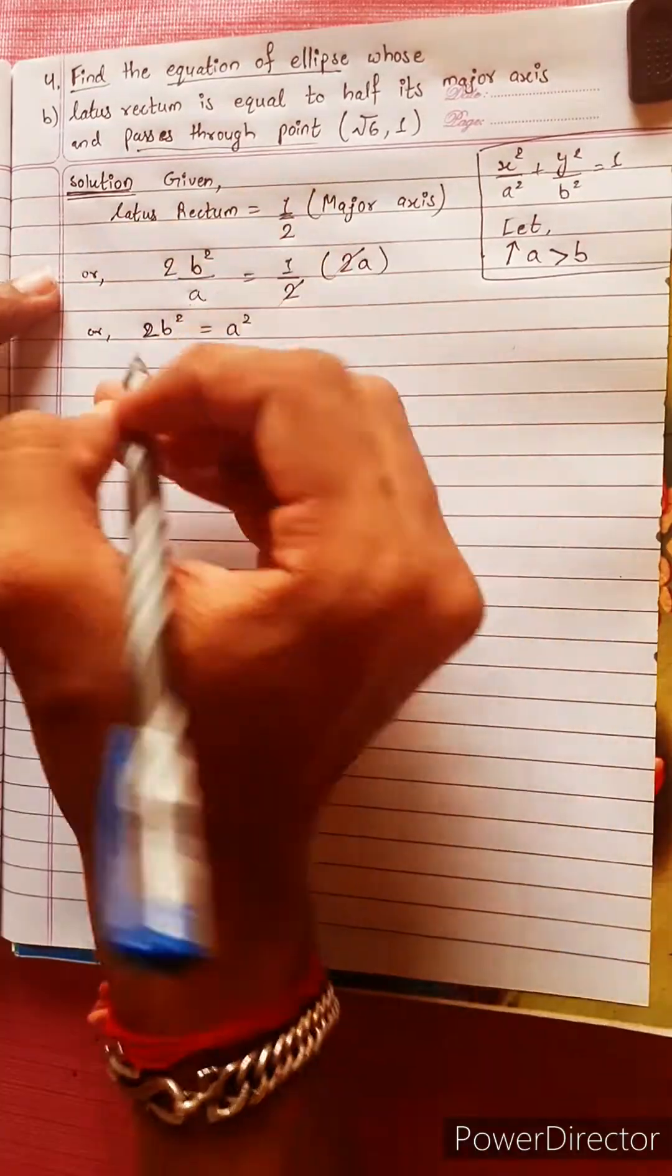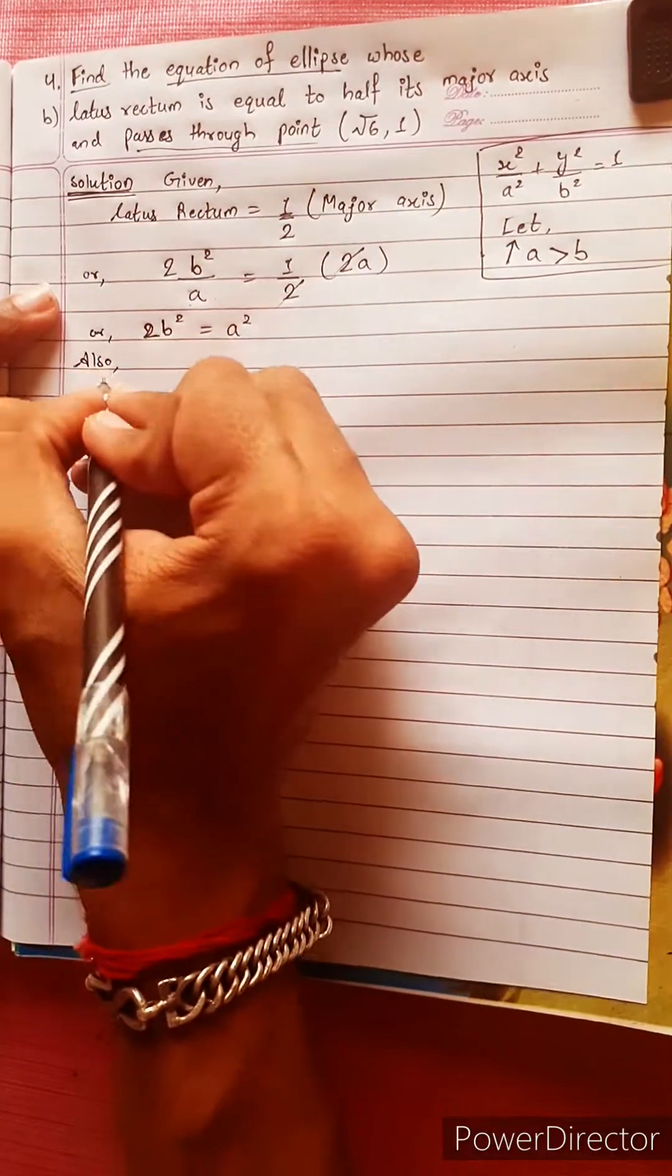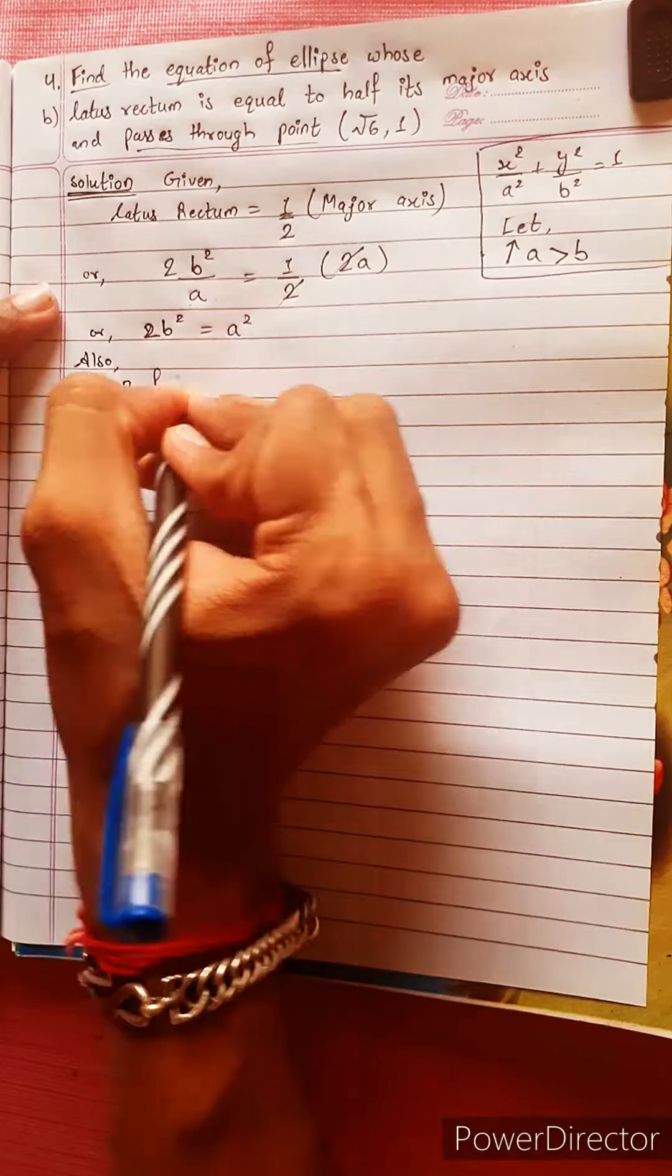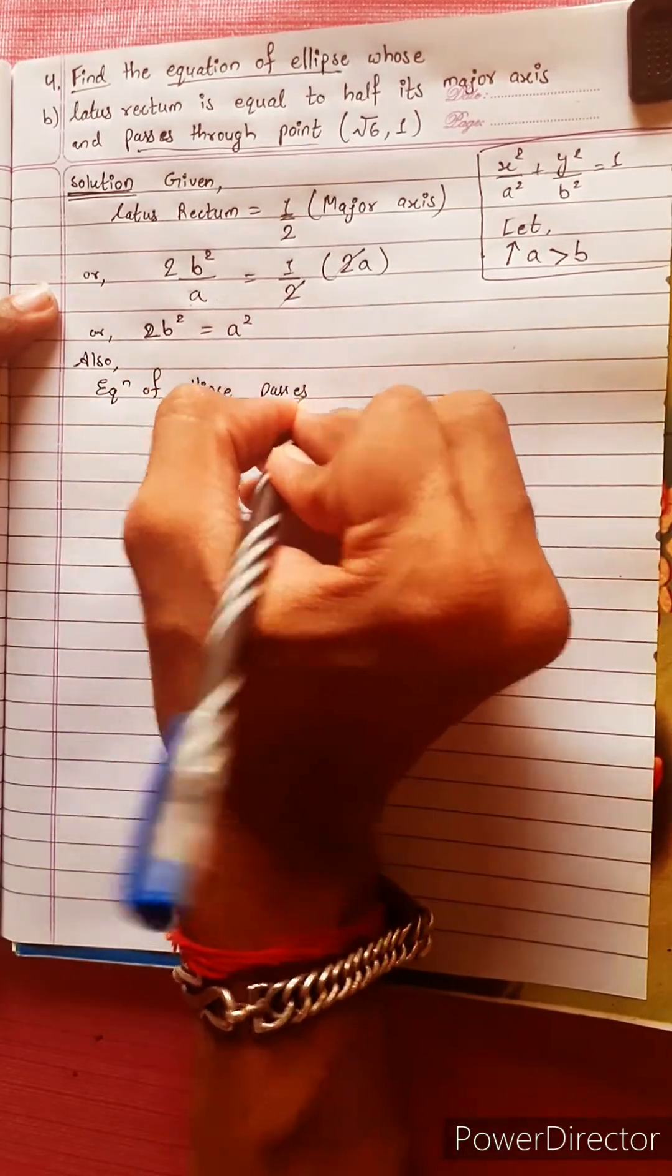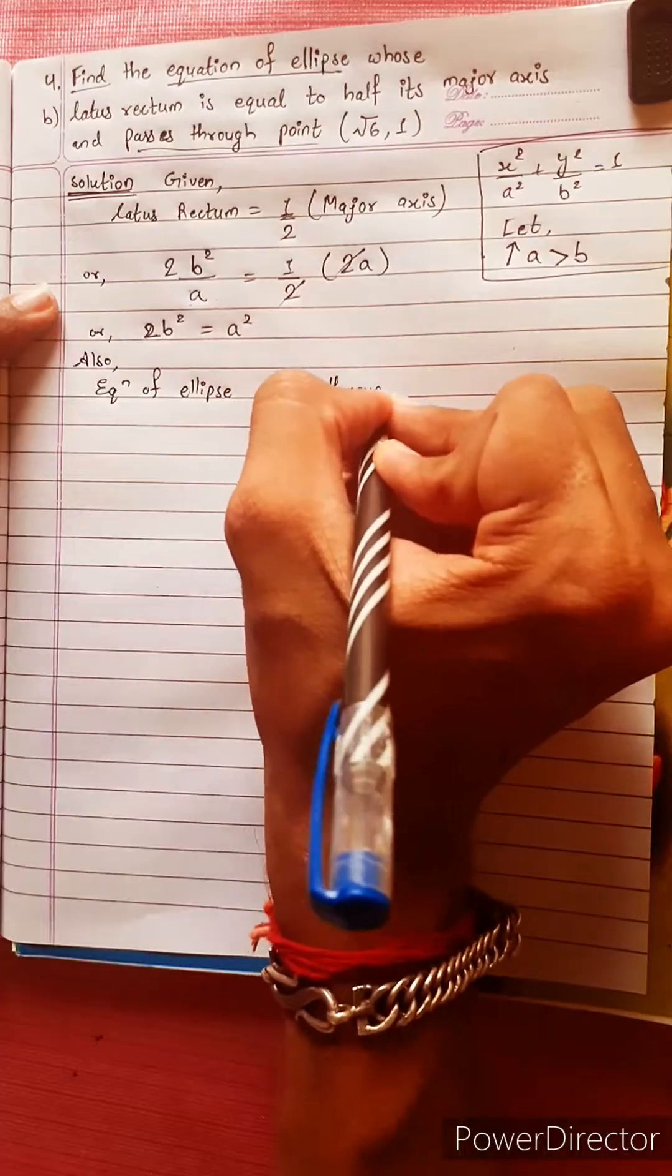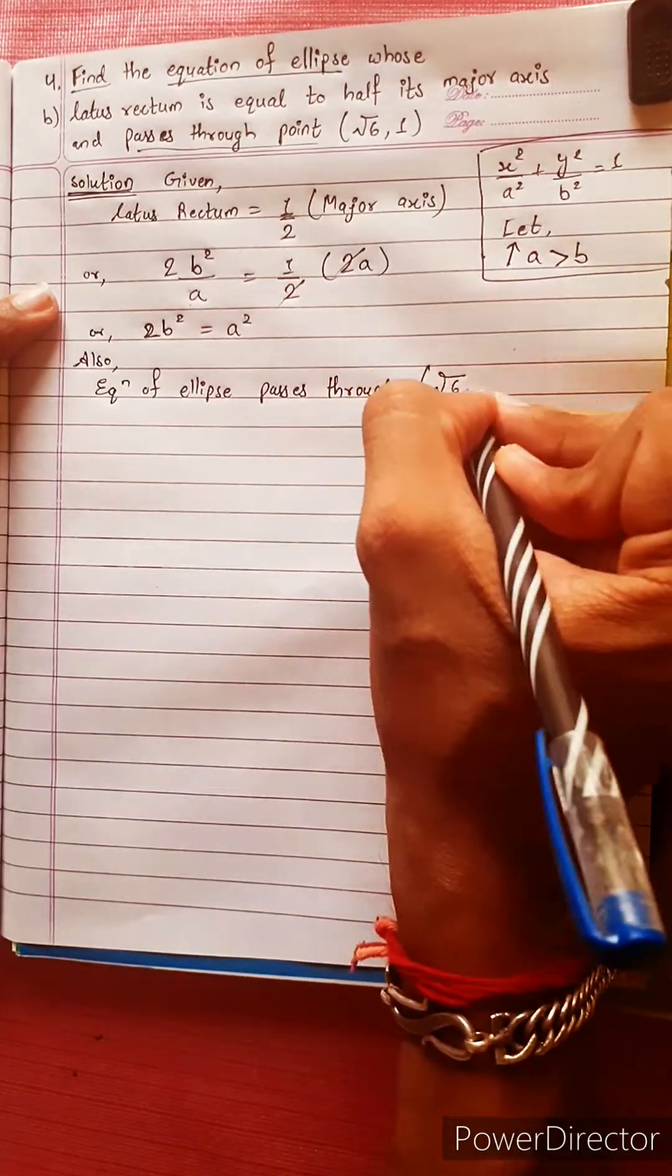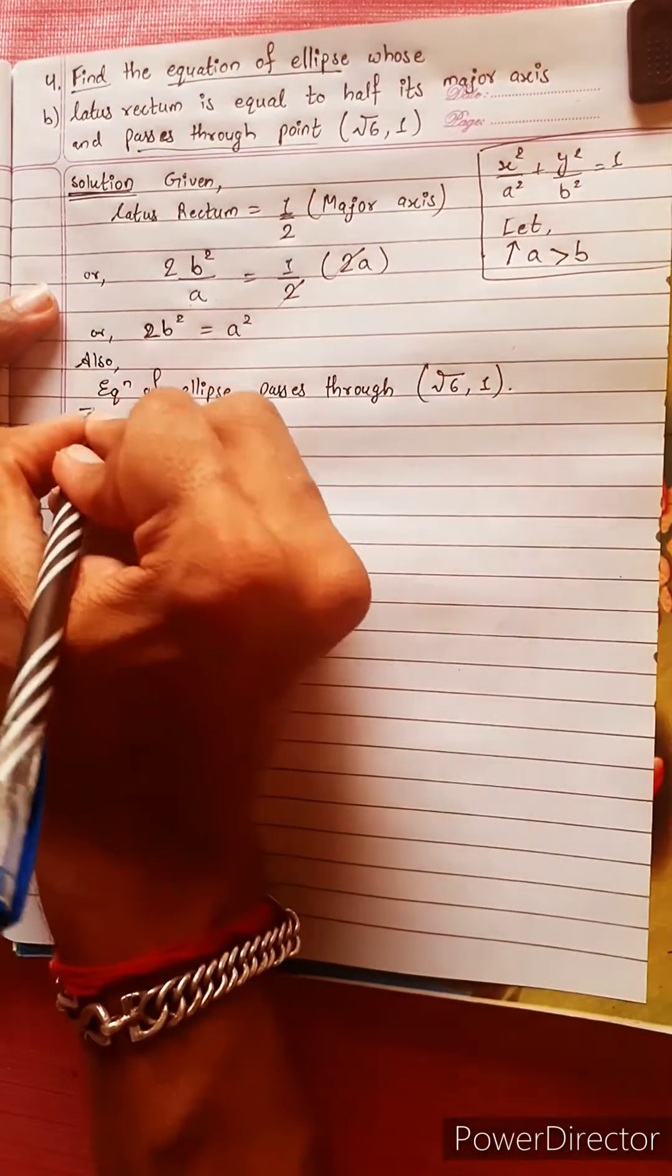But that we know. The equation of ellipse passes through the point (√6, 1).